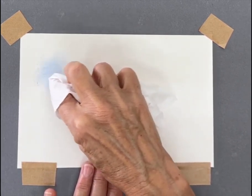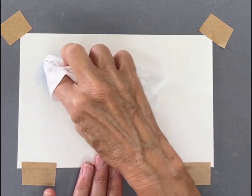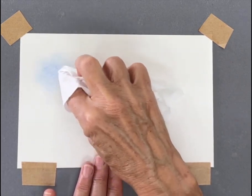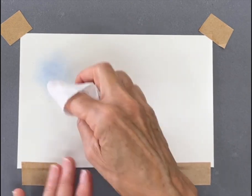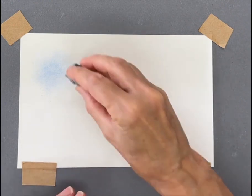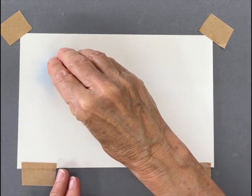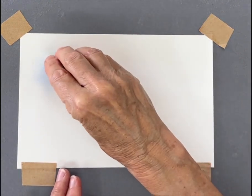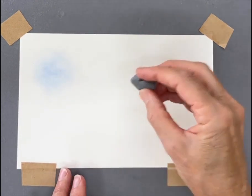And depending on how strong you want the color, just keep adding layers to it. You can actually use your eraser if you wanted, say, a cloud effect. You can just sort of dab out something really gently like that.